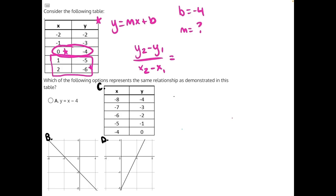That would be our y2 is negative 6 minus a negative 5 is our y1, and then our x2 would be 2 minus x1 is 1. When we do this math, subtracting a negative is the same as adding a positive.